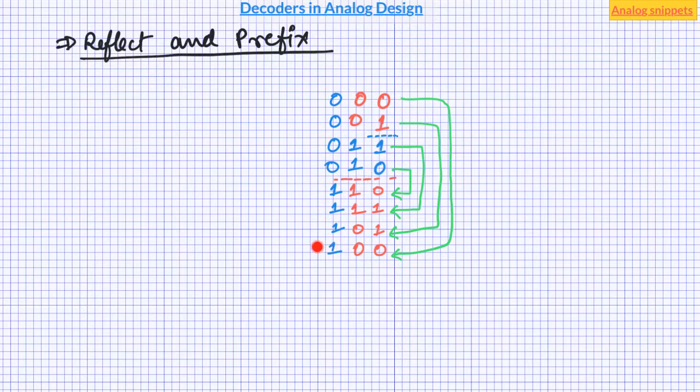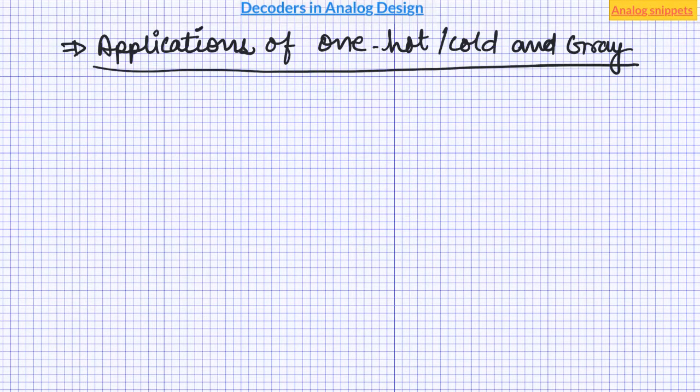Notice that there is a cyclic symmetry in these codes. Something like this. So you can start at any code and then traverse clockwise or anticlockwise. One-hot, one-cold and gray decoders are used where at a given time only one selection has to be made. For example selecting modes of the operations, or in selecting a tap in a resistor ladder, for example in programmable voltage generator or in programmable LDO.